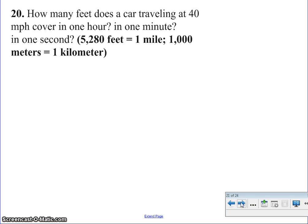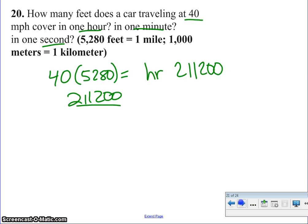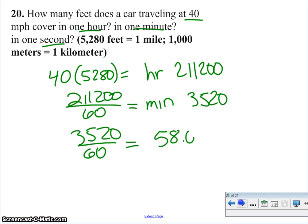How many feet does a car traveling 40 miles an hour cover in one hour, one minute, and one second? Remembering the 5,280 feet in a mile. So for one hour, I would take the 40 miles per hour times 5280 for feet, and in one hour, it would be 211,200. In one minute, I'm going to take the 21,200 and divide it by 60 because there's 60 minutes in an hour. So then the minutes would be 3520. And then finally, second, I take the 3520, divide it by 60 because there's 60 seconds in a minute, and then I give 58.67.